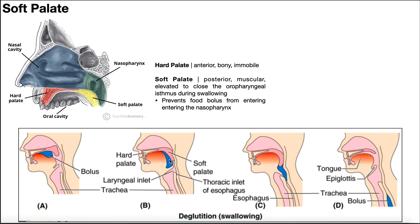As the bolus of food moves inferiorly from the oropharynx into the laryngopharynx and ultimately the esophagus, there has to be a mechanism to prevent food from going through the trachea. The trachea is held open by tracheal cartilages — rings of cartilage that keep it patent, meaning open. So the trachea can't constrict to prevent food from entering it. The only way to prevent this is to put a cap on top of the trachea, and that cap is the epiglottis.